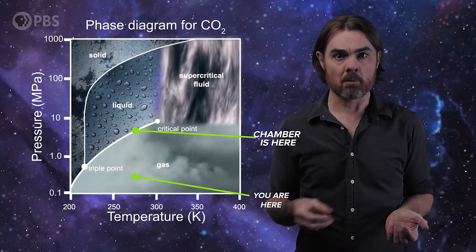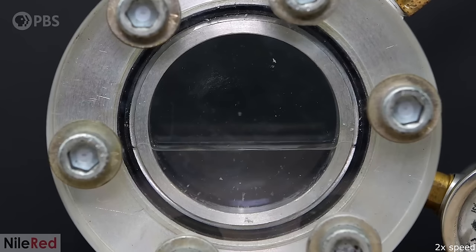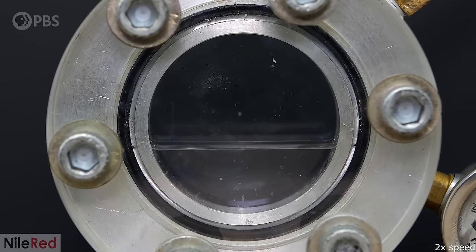Taking us into the realm of the phase diagram where liquid CO2 is possible. That liquid fills the bottom of the chamber, while the top of the chamber is mostly filled with CO2 gas at a much lower density.